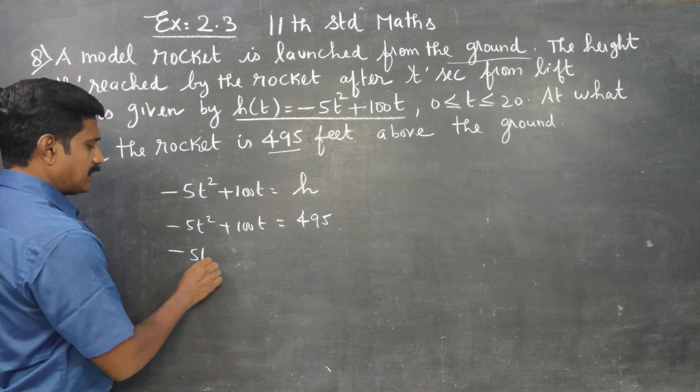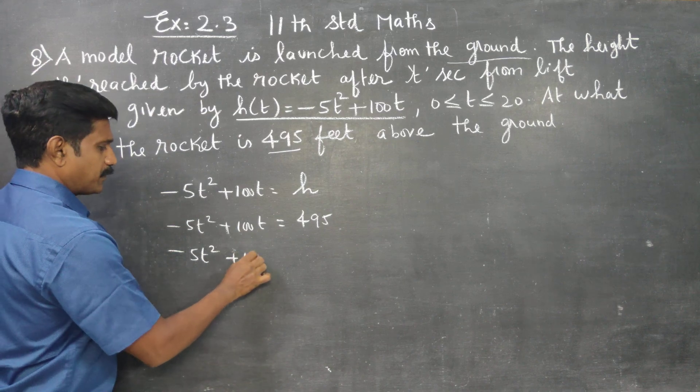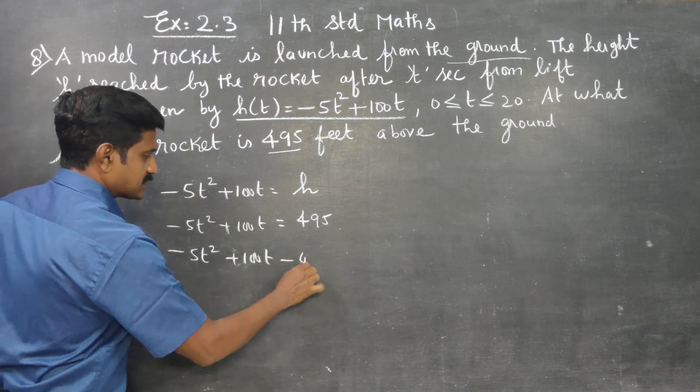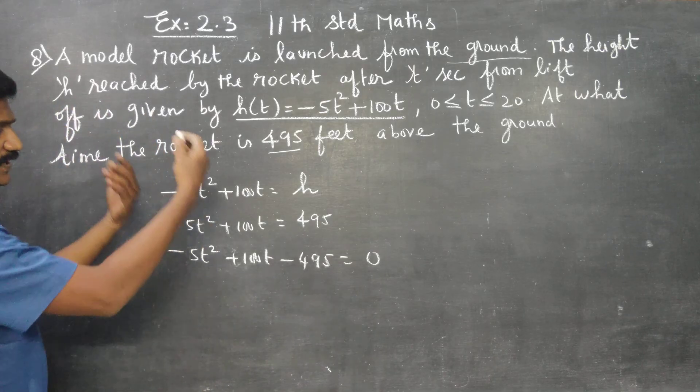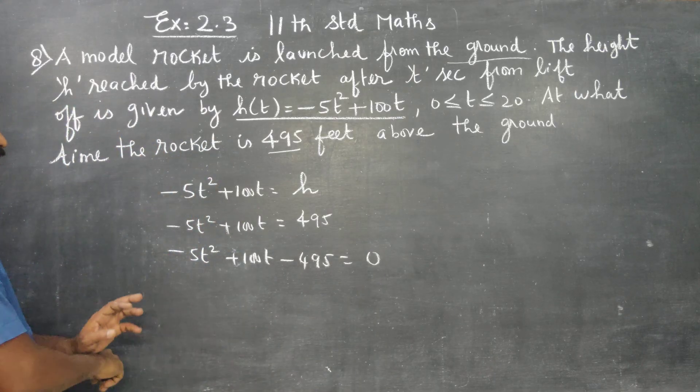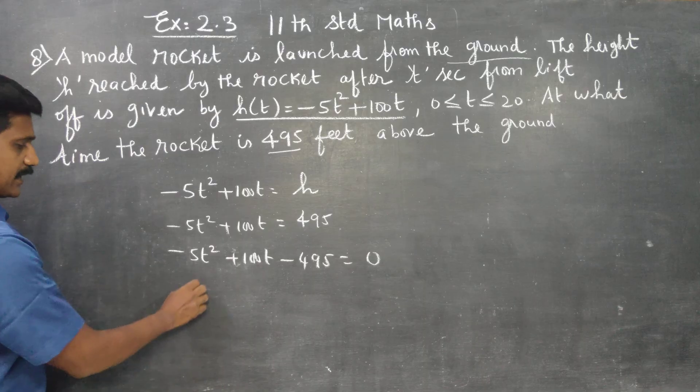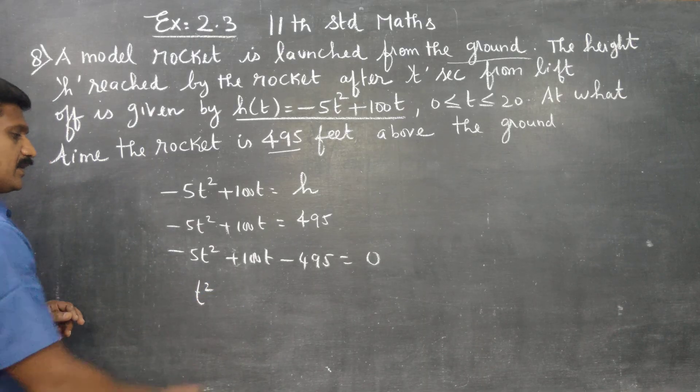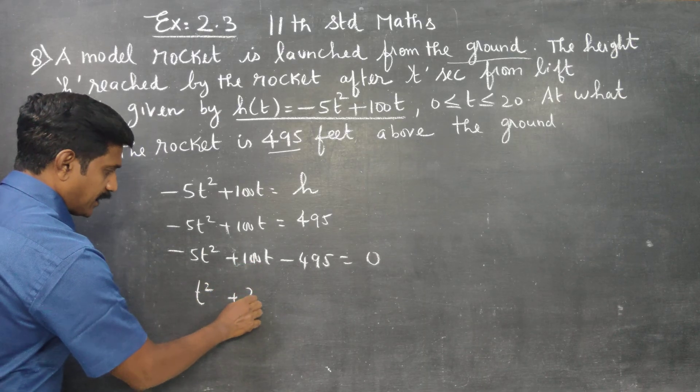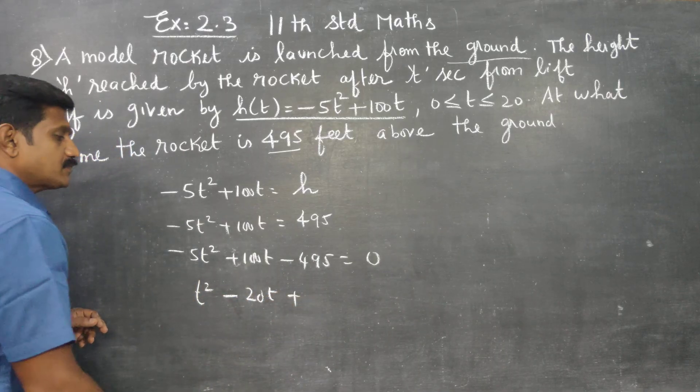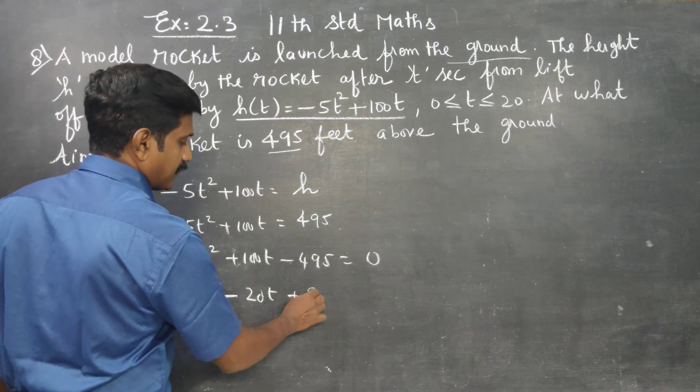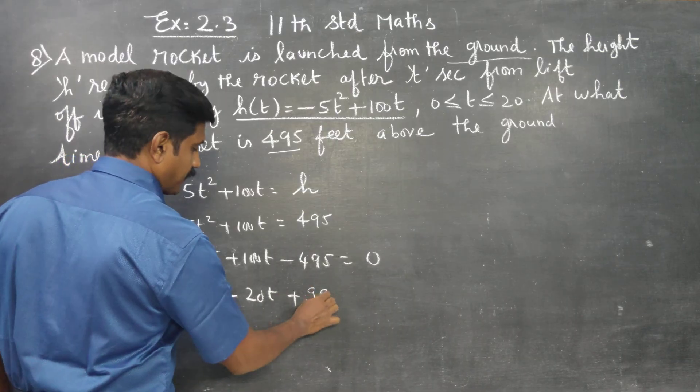495 is the target. Take -5t² + 100t - 495 = 0. Divide by -5. t² - 20t is the result. Plus 99. Divide by 5, we get t² - 20t + 99 = 0.